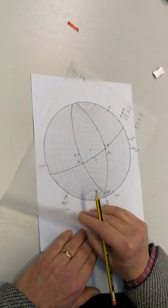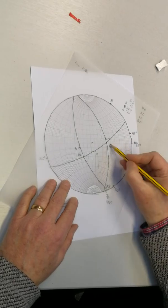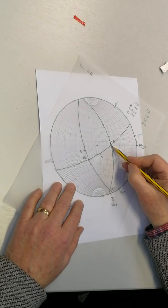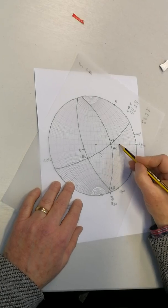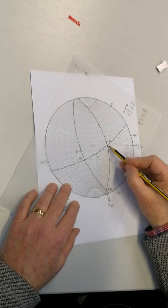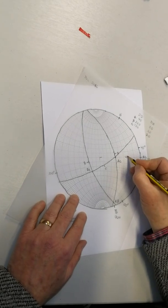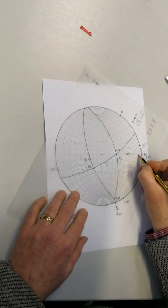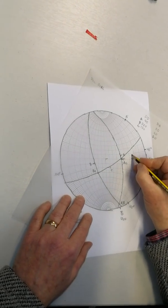Now to find the plunge, I have to move here to the east-west line and I'm simply counting from the outer circle to that point of intersection. And that will give me the plunge. So there's 10, 20, 30, 40. I'm going to call that 49 degrees. That's this distance from here to there, and that's the plunge. I'll use the letter P for that.